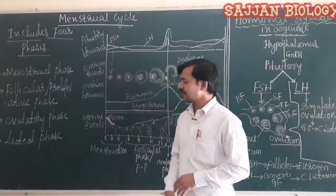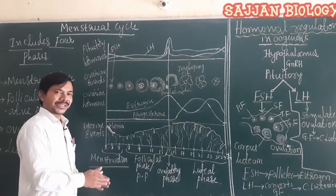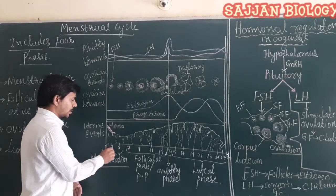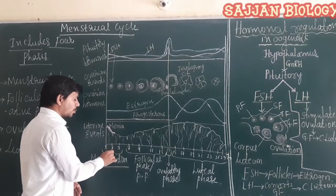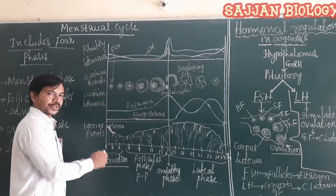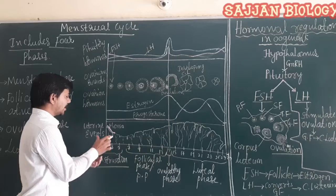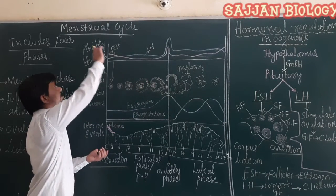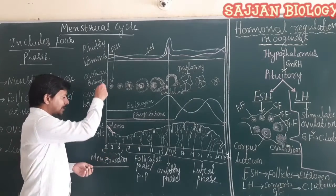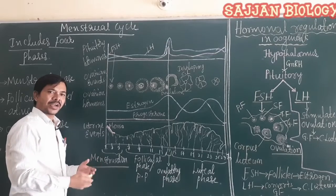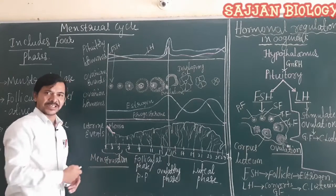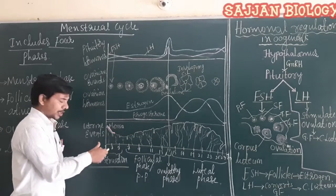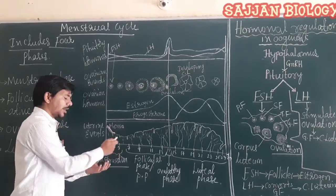The menstrual cycle includes four phases: menstrual phase, follicular phase, ovulatory phase, and luteal phase. The menstrual cycle commonly starts from day one and ends at the fifth day — approximately 3 to 5 days. During these phases, changes occur in the uterus, ovarian hormones, ovarian events, and pituitary hormones. The menstrual phase involves just the degeneration of the endometrium wall.